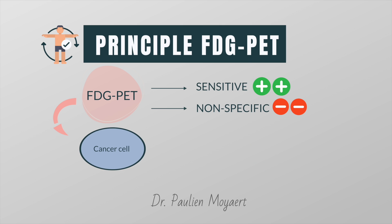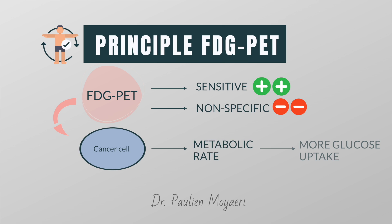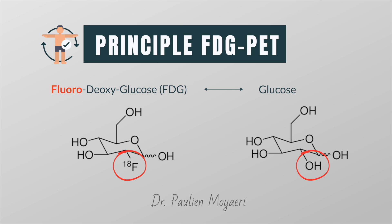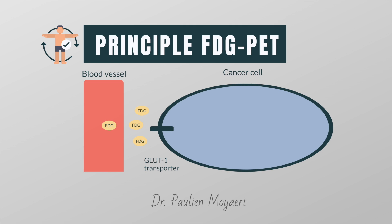The use of FDG-PET in oncology is based on the assumption that cancer cells have high metabolic rates and take up more glucose and FDG than the surrounding tissue. FDG is an analogue of glucose and is used as a marker of glucose metabolism. It is taken up in tumour cells due to an overall increase in the number of glucose transporters and increased intracellular hexokinase levels, which both promote glycolysis.